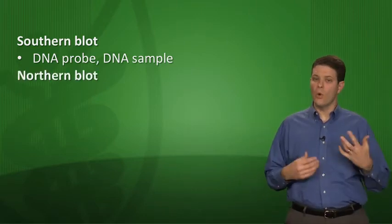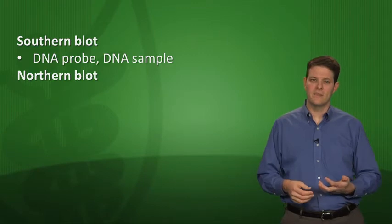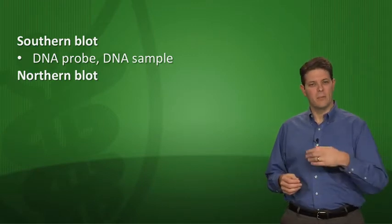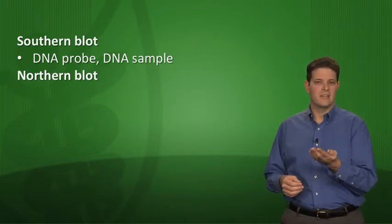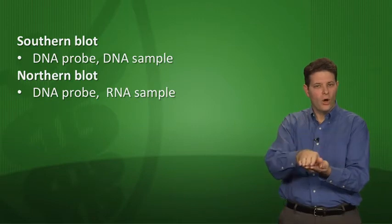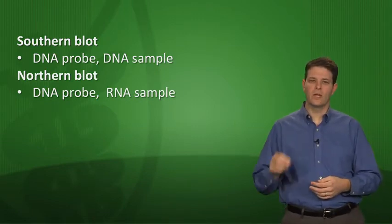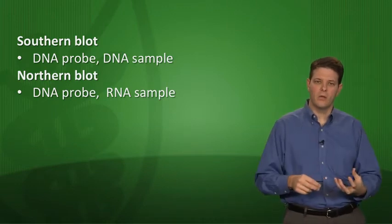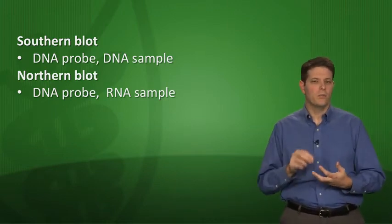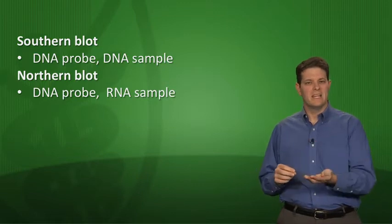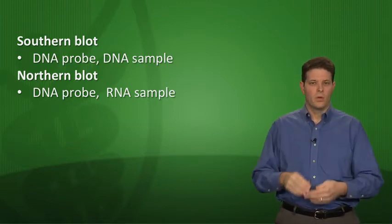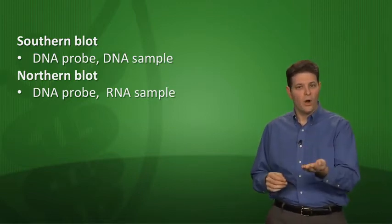A northern blot is very similar except that instead of your sample being DNA, now your sample is RNA. So you're using a DNA probe to identify an RNA sample. Southern is looking at DNA, northern is looking at RNA. I want you to write down next to that what the probe is. For the southern blot, your sample is DNA, your probe is DNA. For the northern blot, your sample is RNA, and again, your probe is DNA.